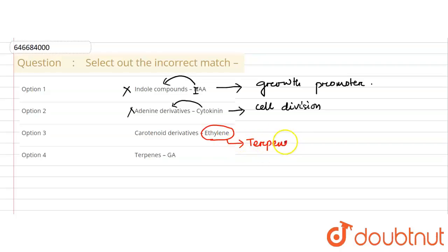That's why this is the answer we are looking for. The example of carotenoid derivative is abscisic acid. Therefore, option 3 is an incorrect match, making it the right answer for this question.